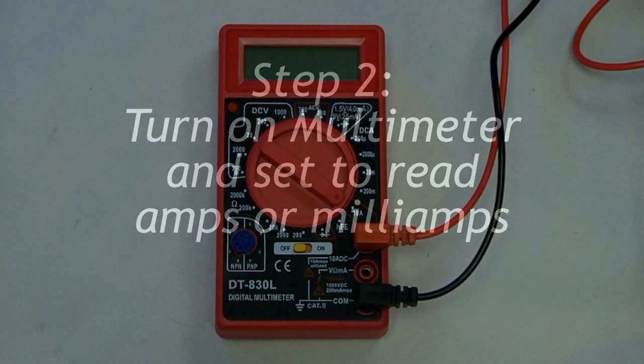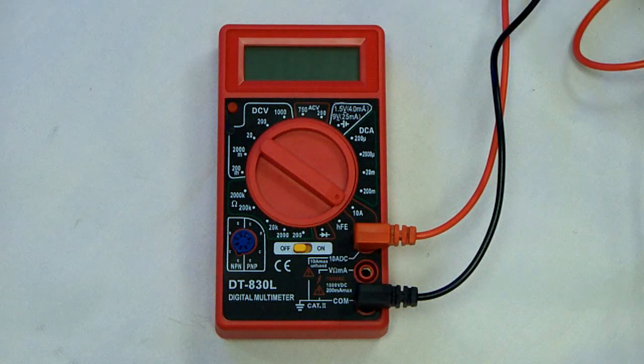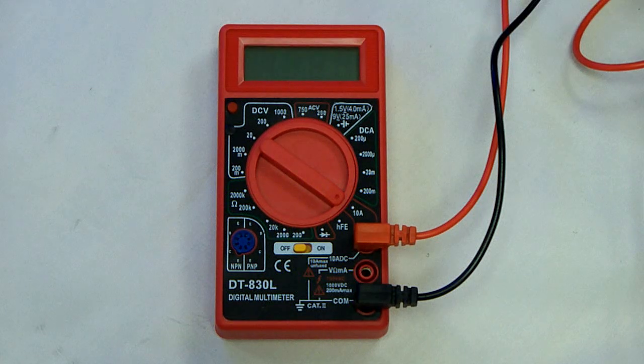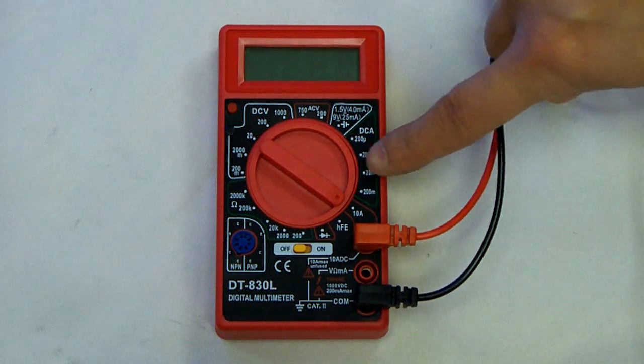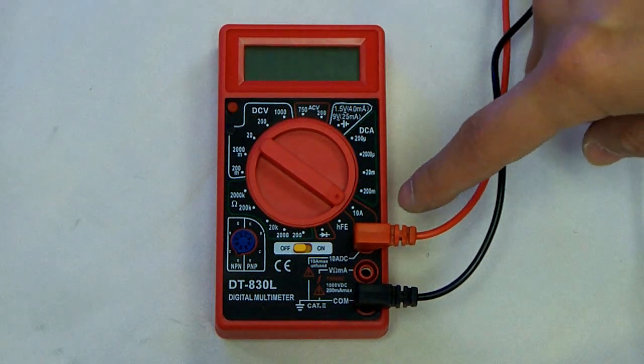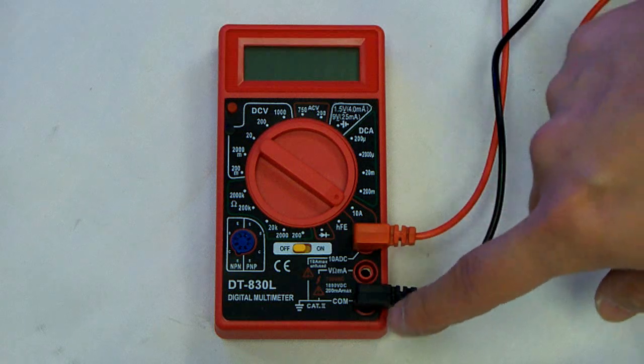When adjusting for SVR2, make sure the meter is set to read milliamps or amps. It's going to differ depending on which multimeter you have, but for ours, you're going to set it at 10A, then put the red prong in this position and the black one in this one.